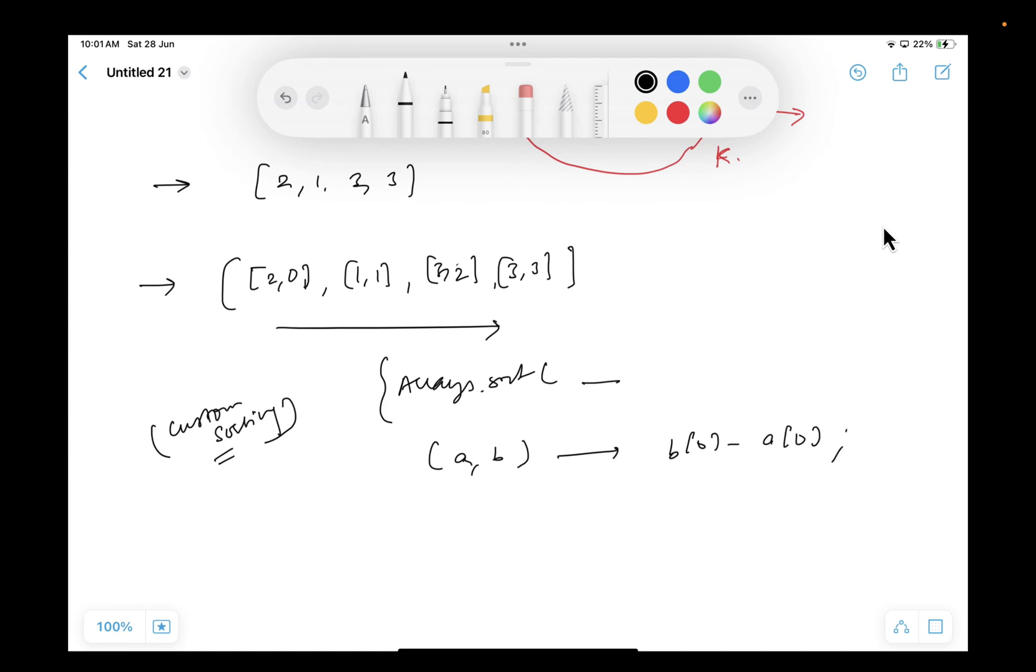Let's say, it means, see, this is a function. If this function returns positive, it means swap it. If it is negative, do not swap it. Let's say A is something like this: 3, 2. And B is something like this: 2, 1. B[0] minus A[0]. B[0] is 2, A[0] is 3.